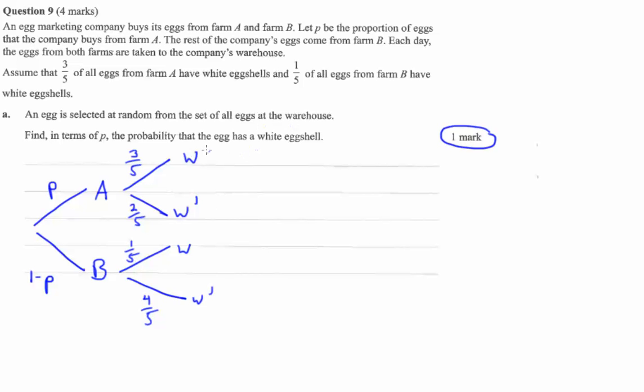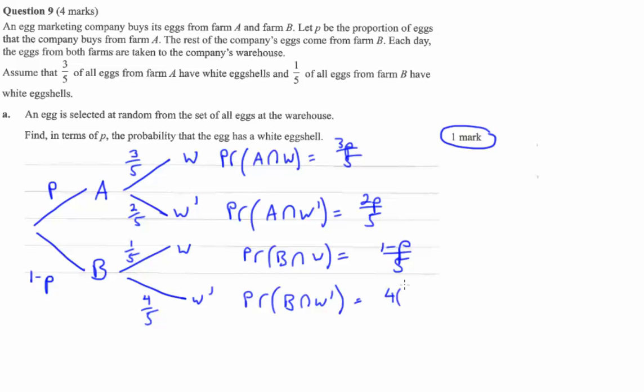All right, let's be pretty about this and write nice notation. So we have the probability that we're from Farm A and we get a white eggshell is three P on five. Multiplying those. Probability we're from Farm B and we're a white eggshell is one minus P on five. The probability of B intersection W prime is four one minus P over five.